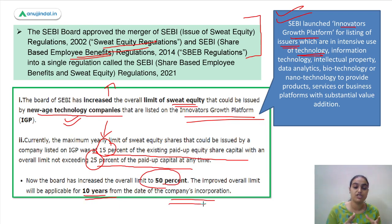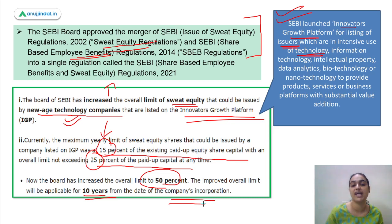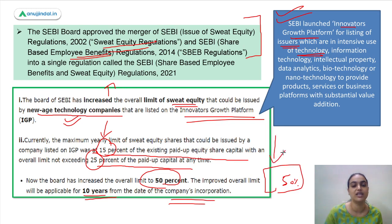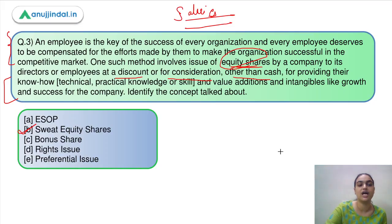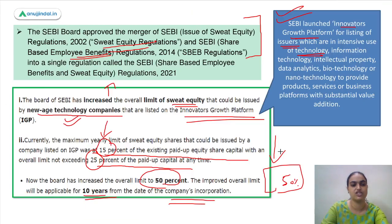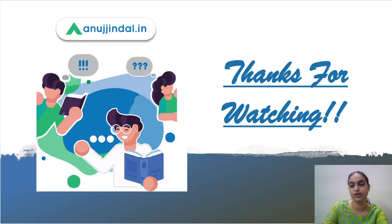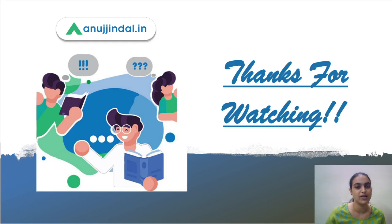So the new overall limit for sweat equity shares for new age technology companies on the Innovators Growth Platform is 50 percent of paid-up capital, applicable for 10 years from incorporation. The answer to question three was option B — sweat equity shares. That was all for today's session. I hope this was useful. Thank you so much.